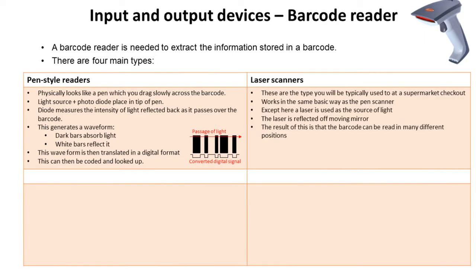The next type is laser scanners. These are the type typically found at the checkout of a supermarket. They work in basically the same way as the pen scanner, but the difference is that a laser is used as the light source, and the laser is reflected off a moving mirror. This is important because it means the barcode can be read from many different positions and angles, allowing scanning to be quick and fast.